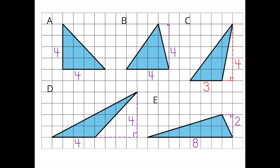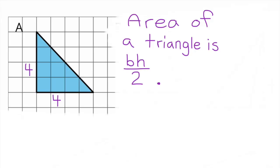Triangle A has a base of 4 units and a height of 4 units. Triangle B has a base of 4 units and a height of 4 units. Triangle C has a base of 3 units and a height of 4 units. Triangle D has a base of 4 units and a height of 4 units. And Triangle E has a base of 8 units and a height of 2 units.